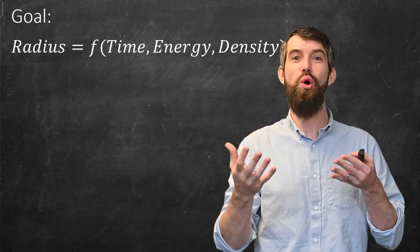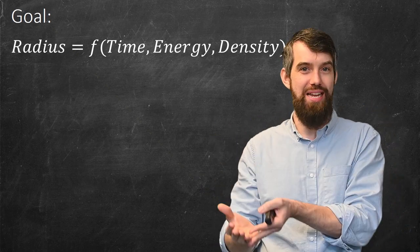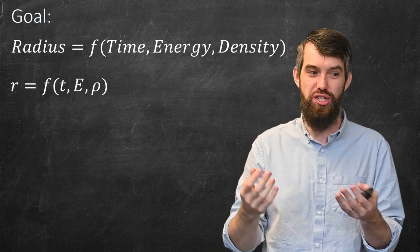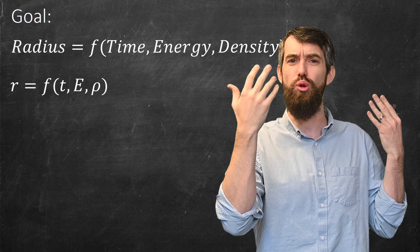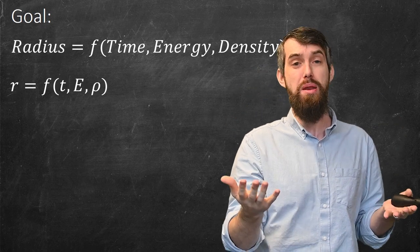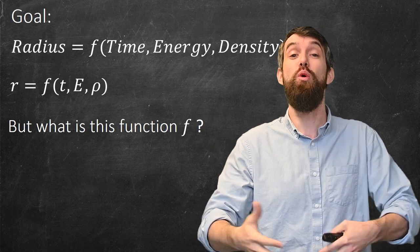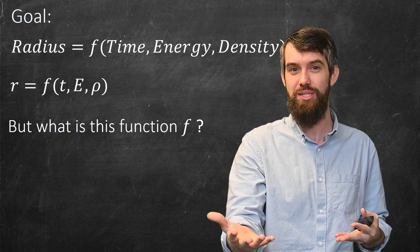So as stated, our goal is to describe the radius in terms of time, energy, and density. And I can give some names for these. I'll just call this r is just a function f of the t, E, and we use the symbol rho for density. And then our big question is, what actually is that function f? That's what we're going to use dimensional analysis to try to analyze what the specific function actually is.